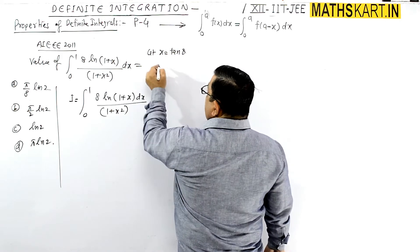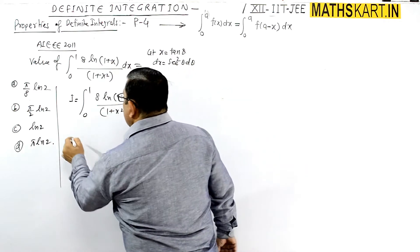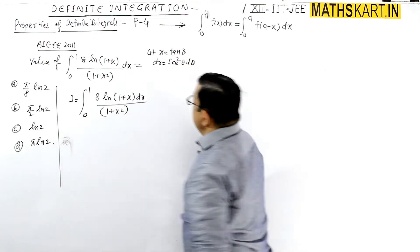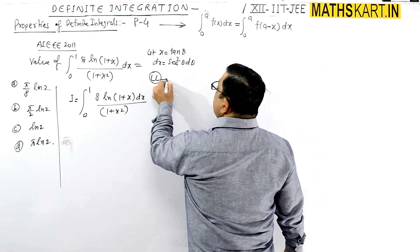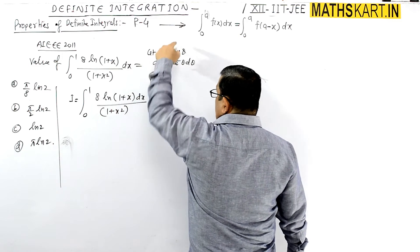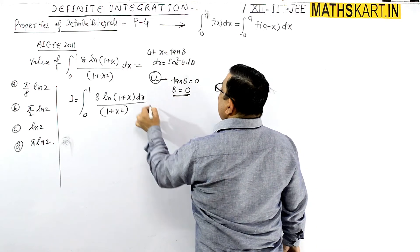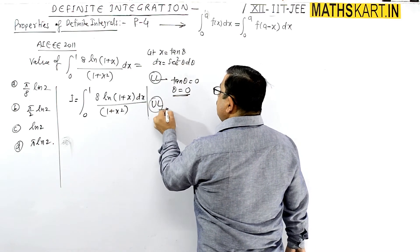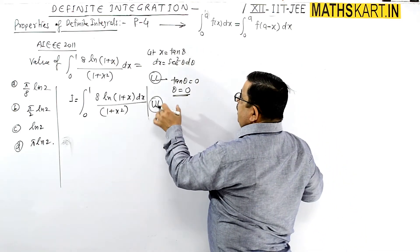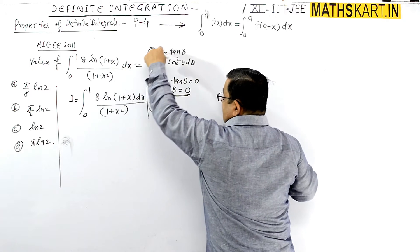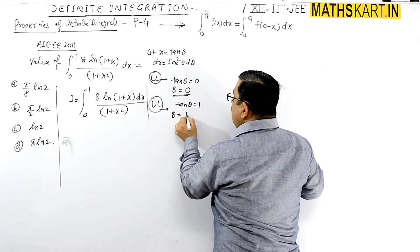With x equals tan theta, dx equals sec squared theta d theta. The limits change: the lower limit becomes 0 and the upper limit becomes pi by 4, since tan(pi/4) equals 1. Also note that 1 plus tan squared theta equals sec squared theta, so that cancels with the sec squared theta from dx.